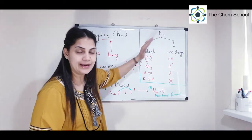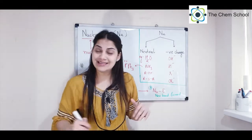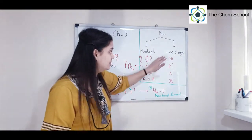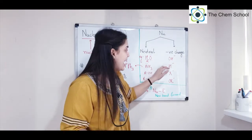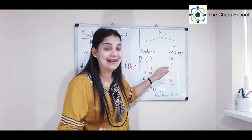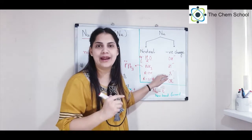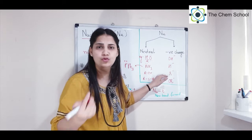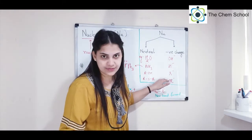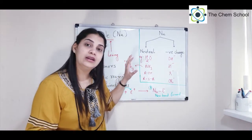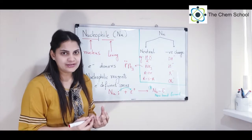If a species has a negative charge, it is also electron rich and therefore a nucleophile. Examples of negatively charged nucleophiles include OH⁻ (hydroxide), H⁻ (hydride), X⁻ (halides such as chloride, bromide, iodide, fluoride), and OR⁻ (alkoxides).